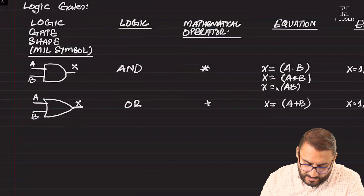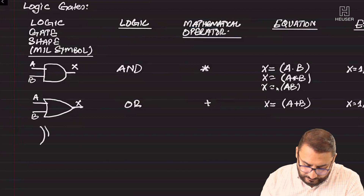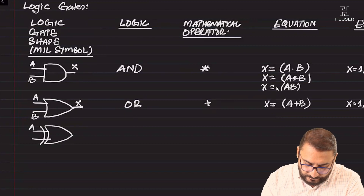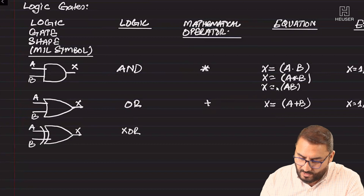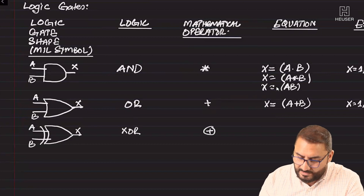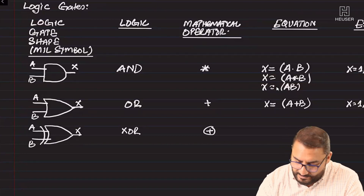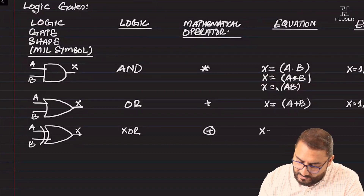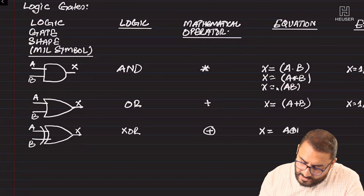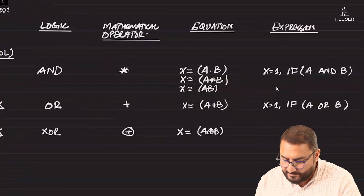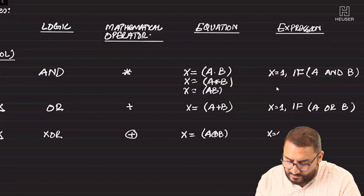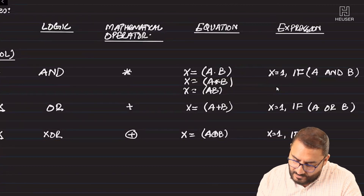Then there is the Exclusive OR gate. The mathematical operator is the circled-plus — that is why they are termed non-standard operators, as they are not actual mathematical operators. The equation will be X = A XOR B, and the expression is X = 1 if A exclusive OR B.